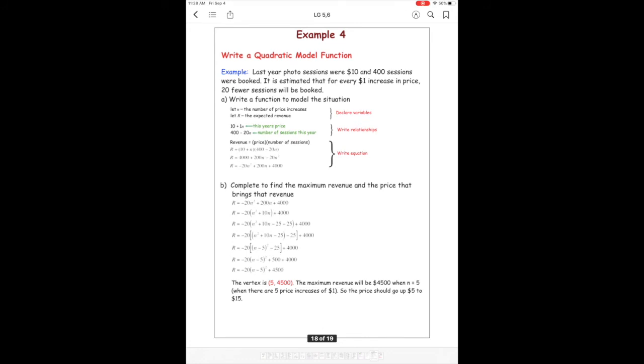Example 4, now we're going to look at modeling real-life functions using quadratics. So this example, I'll just go through with you. So last year, the photo sessions were $10, and 400 sessions were booked. It is estimated that for every $1 increase in price, 20 fewer sessions will be booked.